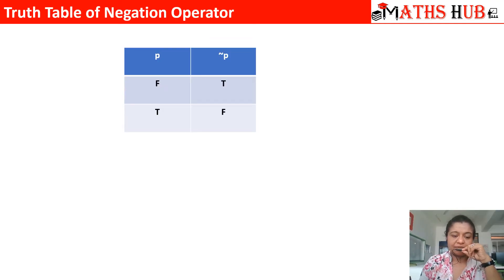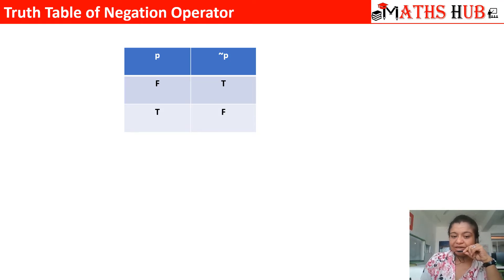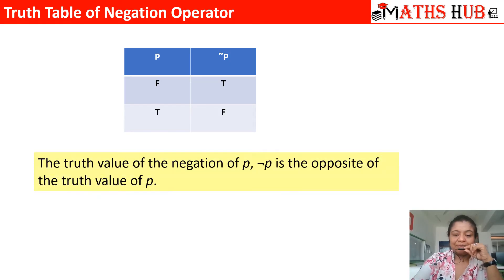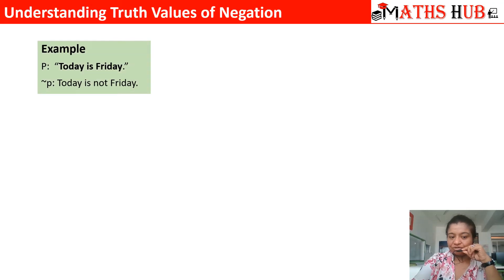Now let us understand the truth table for the negation operator. The input is P and the output is negation P. It is simple: when the statement P is false, the negation has to be true; and when the statement P is true, the negation has to be false. So the truth values of negation P are just the opposite of the truth values of P.